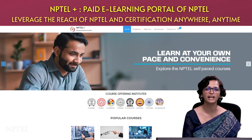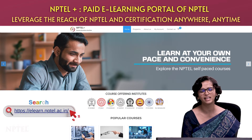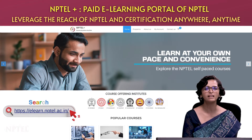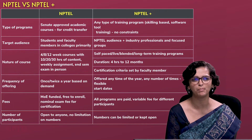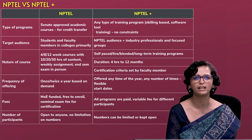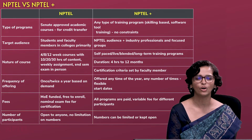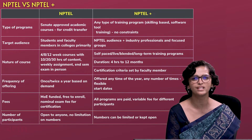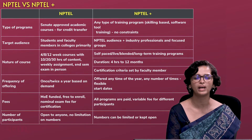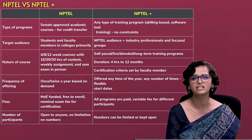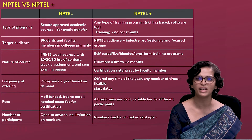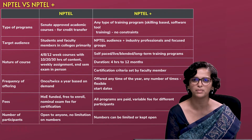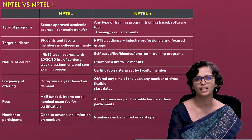NPTEL Plus is a portal where additional learning can be done apart from just the regular courses. There are two or three parts to this portal. For comparison: NPTEL can run only senate-approved academic courses normally taken for credit transfer, targeting students and faculty in colleges, with fixed durations of 8–12 weeks, fixed exam dates, offered once or twice a year in January or July semester. Enrollment is free, the exam has a fee, and it is open to anyone with no restriction on numbers.